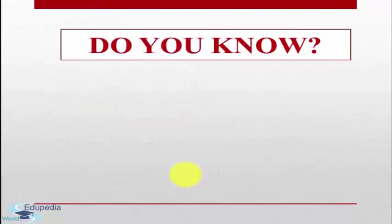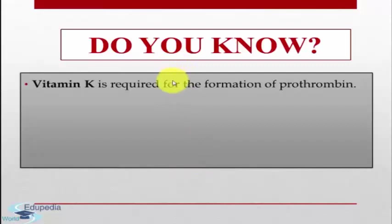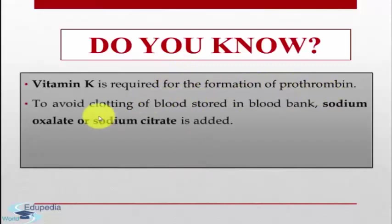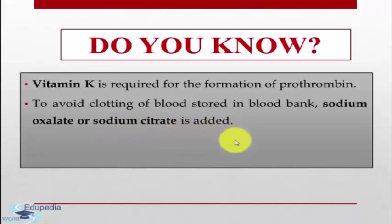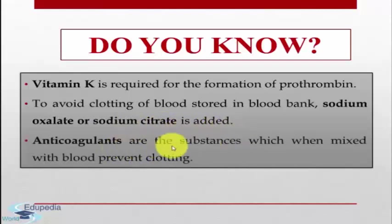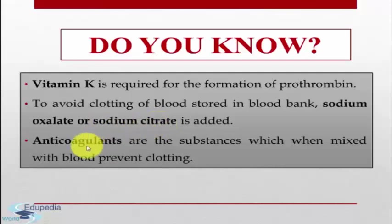There are some facts related to clotting. Vitamin K is required for the formation of prothrombin. To avoid clotting of blood stored in a blood bank, sodium oxalate or sodium citrate is added. Anticoagulants are substances which, when mixed with blood, prevent clotting. So sodium oxalate and sodium citrate are anticoagulants added in order to avoid clotting of stored blood.